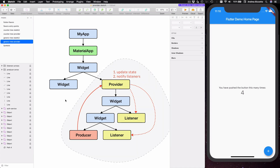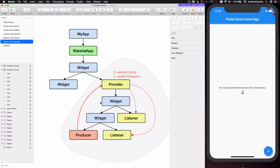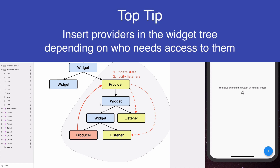On the other hand, a widget that does not have the provider as an ancestor does not have access to it. So the bottom line is that every time we create a new provider we need to decide where it should go on the widget tree depending on who needs access to it, and we will talk more in detail about this in a future video.